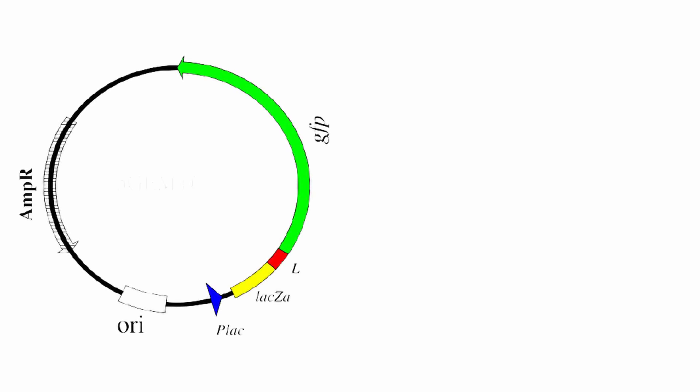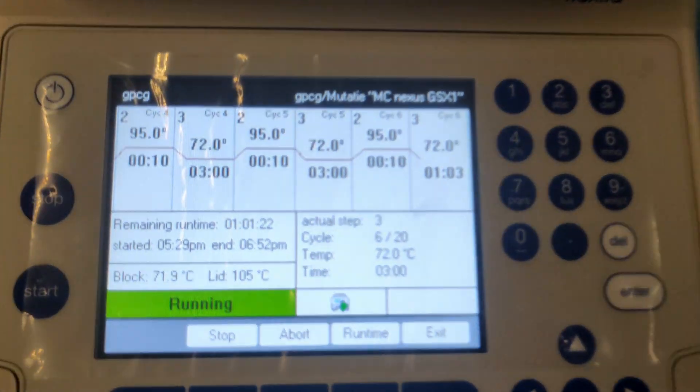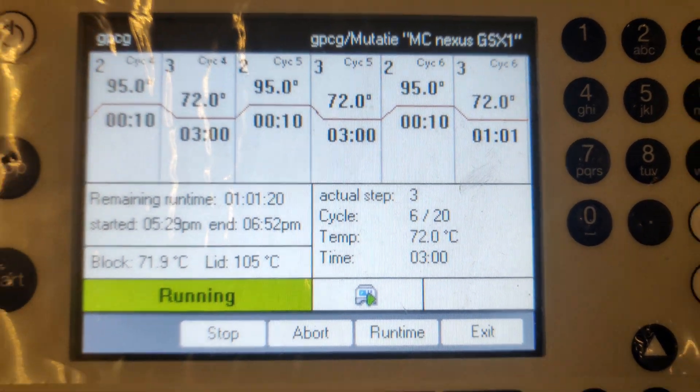The goal of this video is to show how we can change the plasmid already containing the GFP gene to, for example, a plasmid containing the yellow fluorescent protein gene. By setting up a specific polymerase chain reaction we were able to do this.